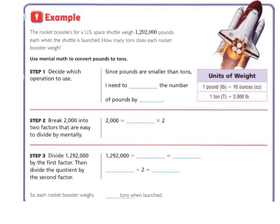Moving on to our example. The rocket boosters for a US space shuttle weighs 1,292,000 pounds each when the shuttle is launched. How many tons does each rocket booster weigh? We're going to use mental math to convert pounds to tons.